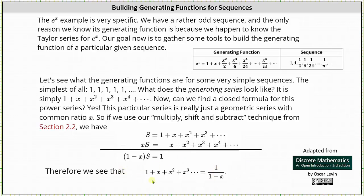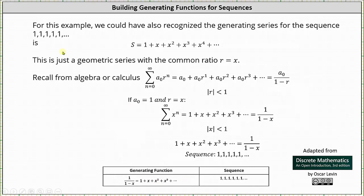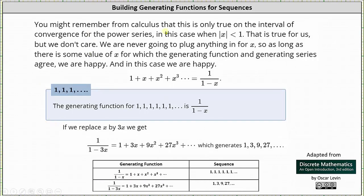Another approach is to remember from algebra or calculus that for an infinite geometric series where the absolute value of the common ratio is less than 1, the infinite sum is a₀ divided by the quantity 1 minus r. For our series, a₀ equals 1 and r equals x, giving us 1 divided by 1 minus x. This is technically only valid when the absolute value of x is less than 1, but we never plug anything in for x — as long as there is some value of x for which the generating function and generating series agree, we are happy.